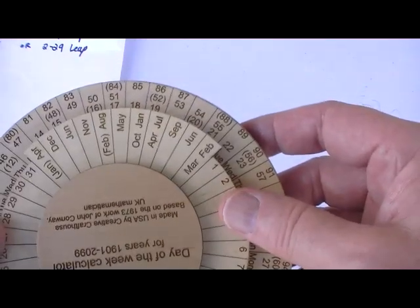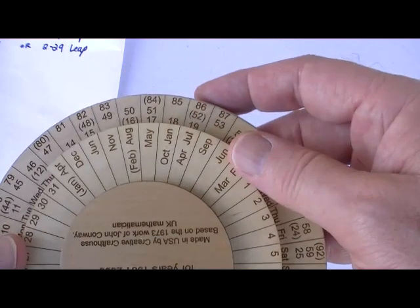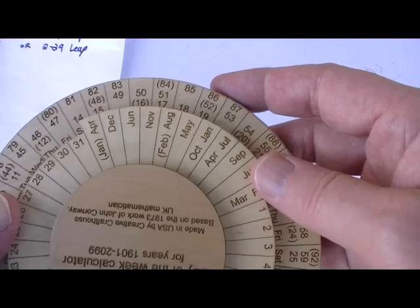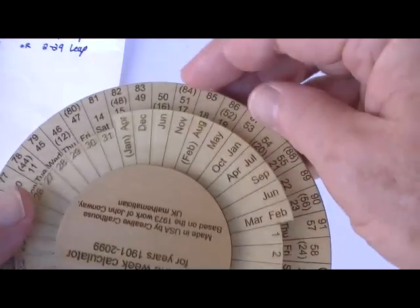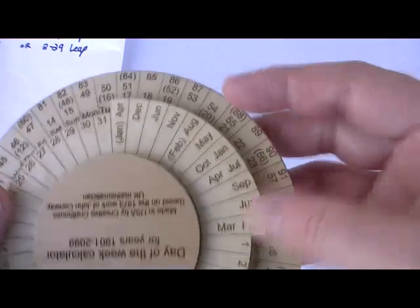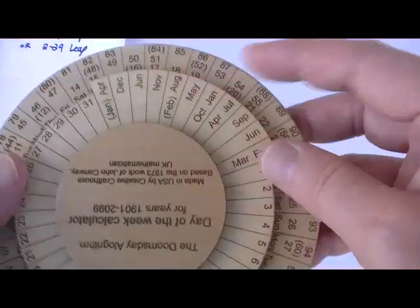And that's really all you're going to do. The numbers in parentheses represent leap years, like you see the 84 here. And on leap years, if the date you're looking for is in either January or February, you will use the January in parentheses, as opposed to the January not in parentheses.